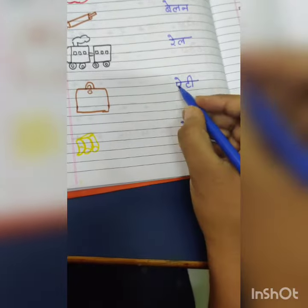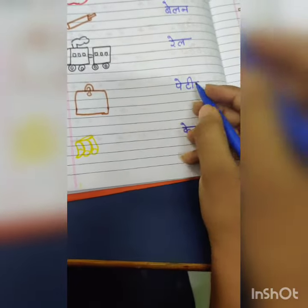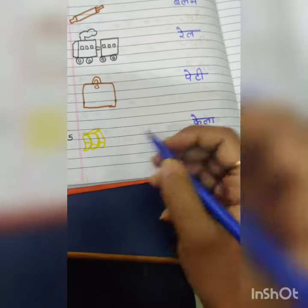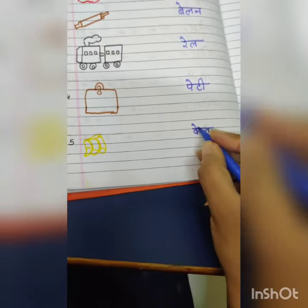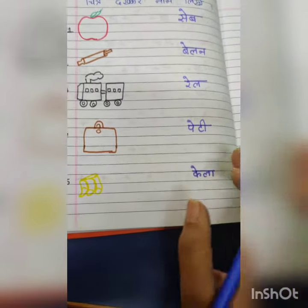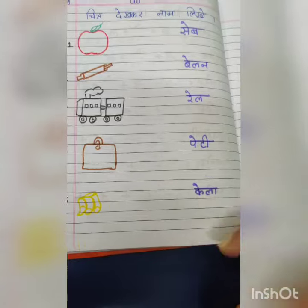Fourth is peti: pa mein a ki matra, then ta mein badi ki matra — ti, peti. And the last is ka mein a ki matra — ke, then la mein a ki matra — la, kela.